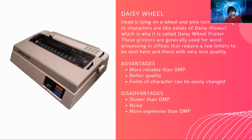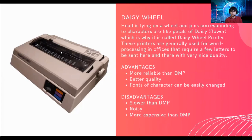Next is the daisy wheel printer. The head is lying on a wheel, and pins corresponding to characters are arranged like petals of a daisy flower, which is why it is called a daisy wheel printer. These printers are generally used for word processing in offices that require letters with very nice quality. The advantages are that it is more reliable than dot matrix, has better quality, and fonts can be easily changed. The disadvantages are that it is slower than dot matrix, very noisy, and more expensive than dot matrix.